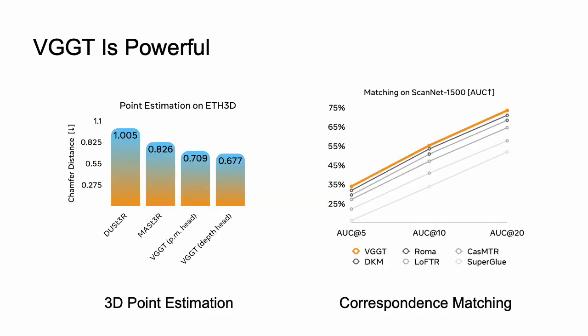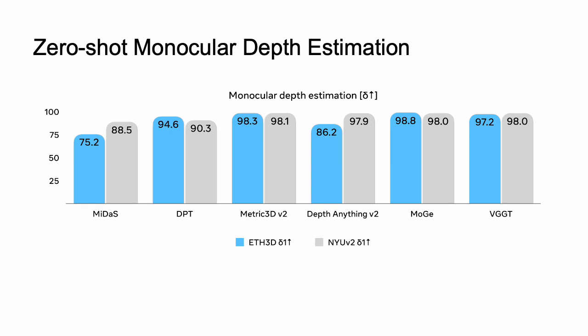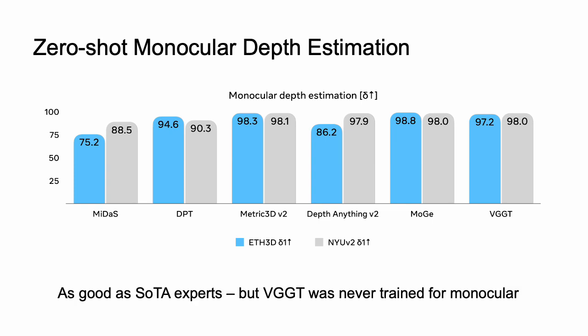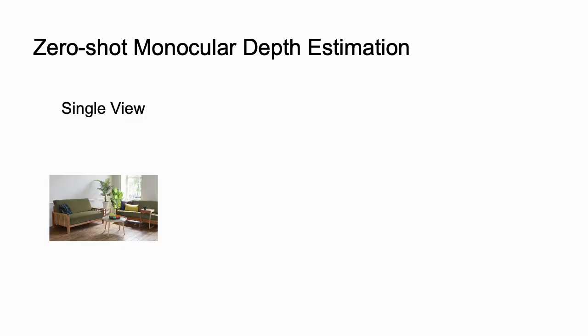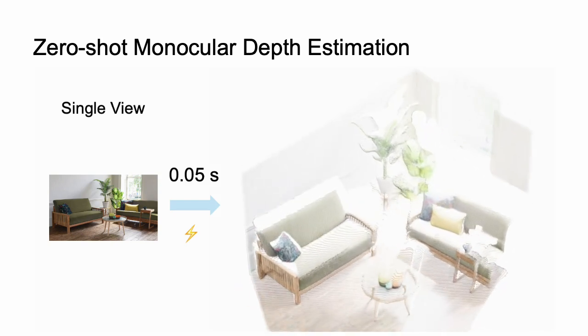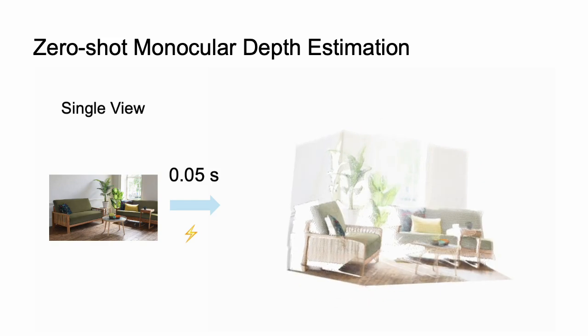Our model is powerful and can handle more 3D tasks. It achieves state-of-the-art results on point cloud estimation and 2D correspondence matching. We also evaluate VGG-Transformer's zero-shot generalization ability to new settings, as well as its ability to boost downstream tasks through simple fine-tuning. Even beyond our own expectation, we noticed that VGG-Transformer is as good as state-of-the-art monocular depth estimation methods such as Depth Anything V2, although VGG-Transformer was never trained for a single-view task. We directly feed a monocular image to the network without duplicating the image into a pair.